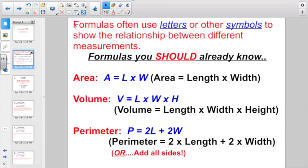It tells us in the book that formulas often use letters or other symbols to show the relationship between different measurements. Here's some formulas we should already know. We should know the formula to find the area. A equals L times W. A for area equals L for length times W for width. Area equals length times width.